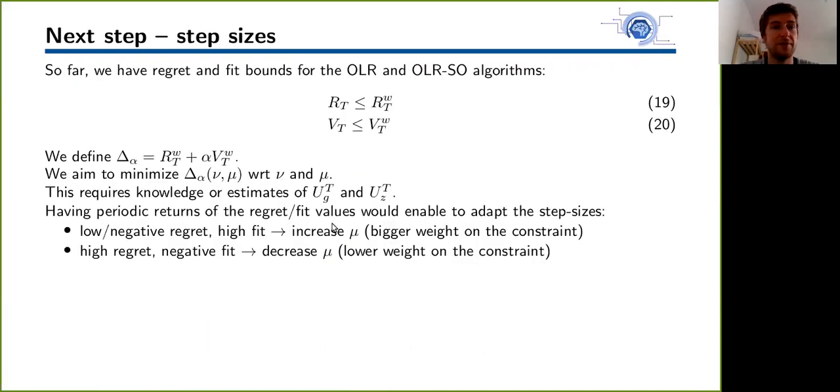We have observed that the step sizes are decisive to the performance of our solution. One way to choose wisely our step sizes would be to minimize this function delta mu, which is actually a weighted sum of the two upper bounds on the regret and fit that we found in our performance analysis. But this requires knowledge or estimates of the variations of the system. Another way would be to have periodic returns of the regret and fit values, and then we would adapt the step sizing accordingly to this feedback.